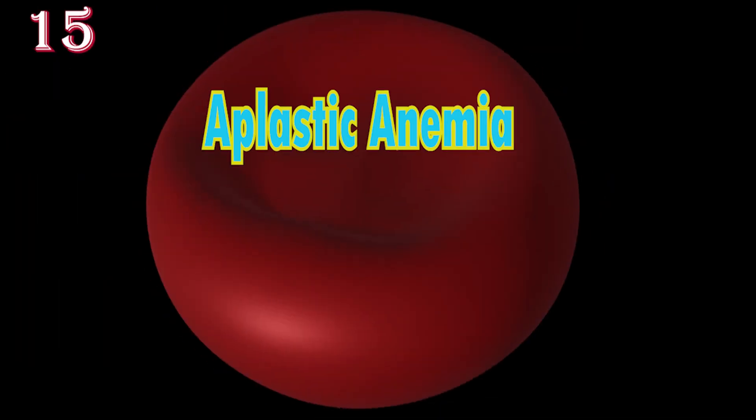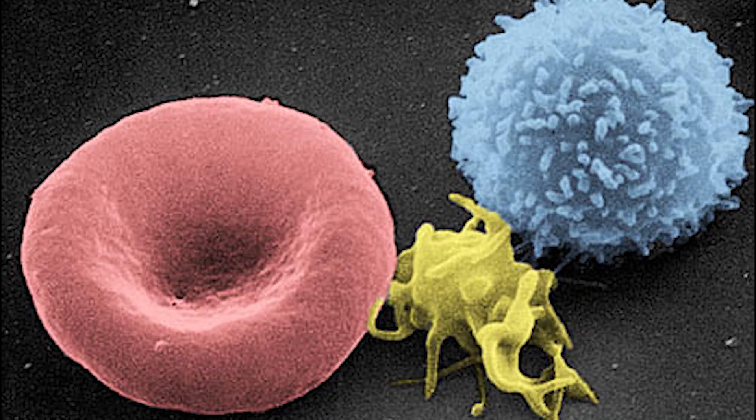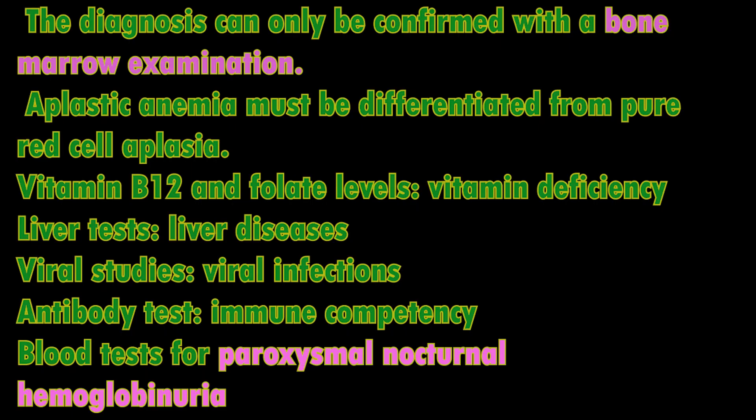Aplastic anemia is a severe hematological condition with deficiency of all blood cell types: RBCs, WBCs, and platelets. Aplastic anemia is associated with cancer and various cancer syndromes, and it can be caused by hereditary immune disease or exposure to chemicals, drugs, or radiation.